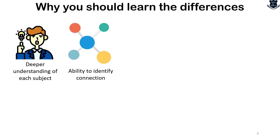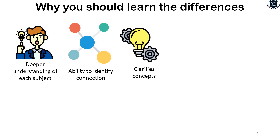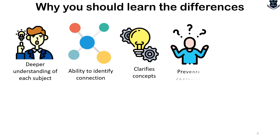Once you understand the differences between related subjects, you can identify connections and appreciate how knowledge from one field can enrich another. It also clarifies concepts — as you saw between magnetic field, magnetic flux, and even prepositions. Understanding the distinction between two subjects gives you clarity on their individual concepts and principles. It clears a lot of confusion, because knowing the differences can prevent confusion between similar concepts or phenomena.